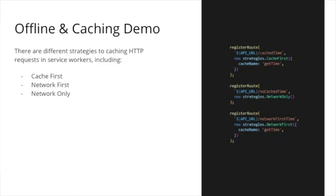What I'll show next is service workers and offline support — how caching can actually be implemented in the background for applications to enable offline capability. I'll focus on three main caching strategies. With a cache-first strategy, any network request will first be checked if it has a value in the cache; if it does it uses that, and if not it falls back to the network and caches the result.